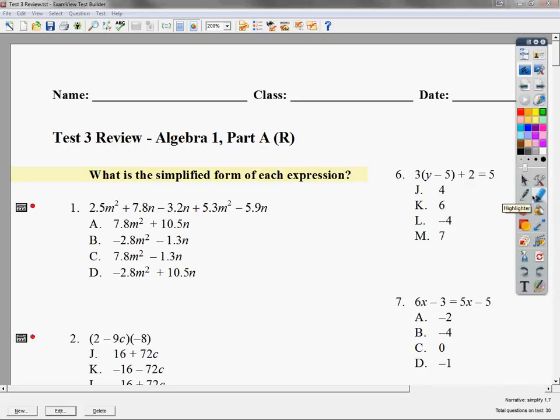This is just a simple combining like terms question. If I have an m squared, I need to mark other m squareds with the same color. Here it is. So, to combine those two, I'm just going to do what it says to do. 2.5 plus 5.3. So 2.5 plus 5.3 is 7.8. And then everything else happens to be an n, so I don't really need to mark them up at all. But I do need to pay attention to the signs. This is a positive 7.8 minus 3.2 minus 5.9. So minus 1.3n. So I'm going to look for that answer in there somewhere, and it appears to be right there. Not really a big deal.